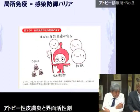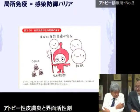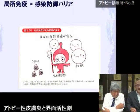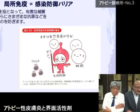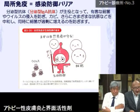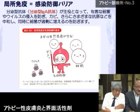局所免疫イコール感染防御バリアということです。体の中にウイルスや抗原が入れないようにスキンバリアがあって、これだけでも十分アトピーは改善します。アレルゲンを排除するために洗うということがとても危険ですよというお話です。